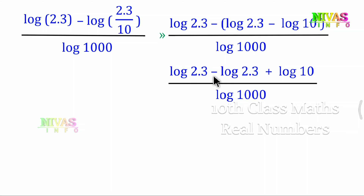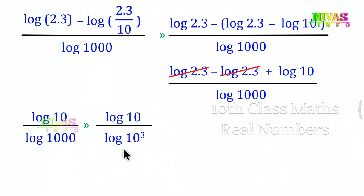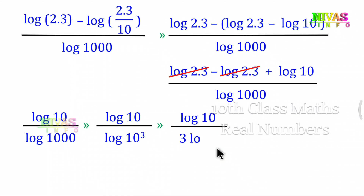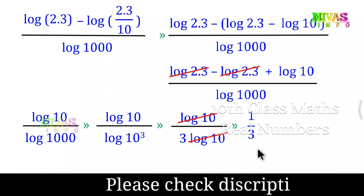After simplification, log 2.3 terms cancel, leaving log 10 by log 1000. Now log 1000 equals log 10 to the power 3, so we have log 10 by 3 into log 10. The log 10 terms cancel, giving 1 by 3. So our answer is 1 by 3.